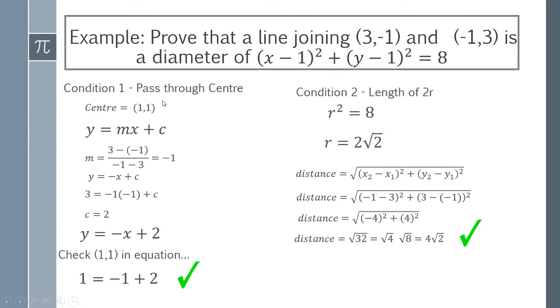And so because we've satisfied the two conditions that it passes through the center and it's got a length of 2r, we have proved that these two points form a line and that line is a diameter of this circle.